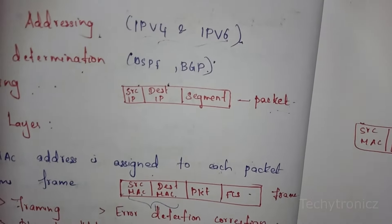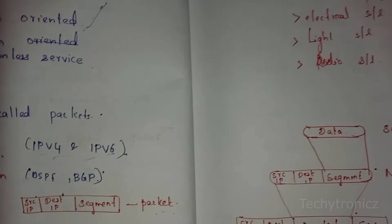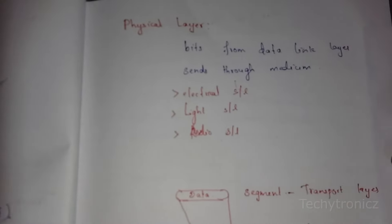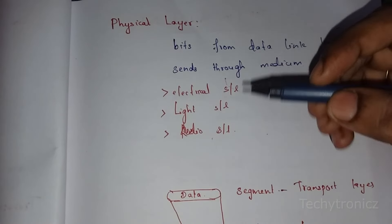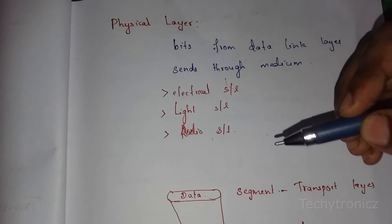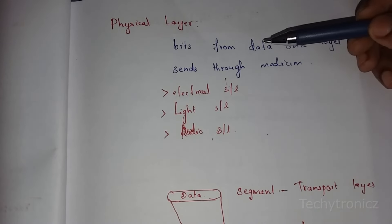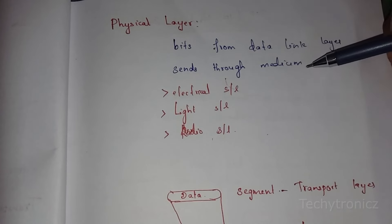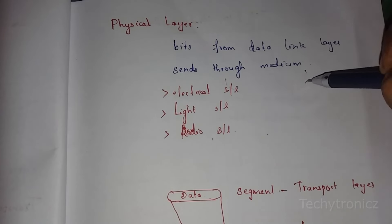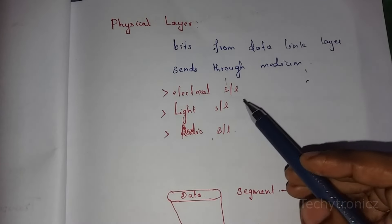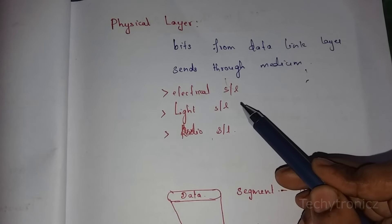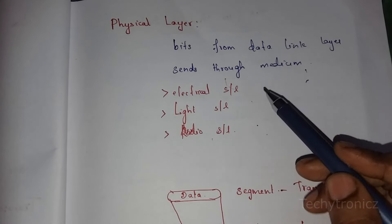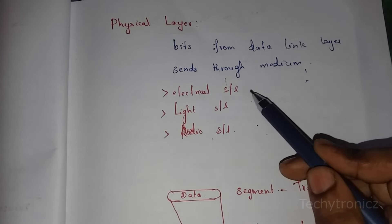The last layer is the physical layer. In the data link layer, the frame is converted to bitstreams, which are transmitted through a medium. It may be an electrical signal through cable, a light signal through fiber optic cable, or a radio signal through air or vacuum.